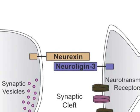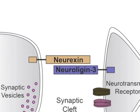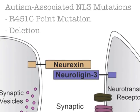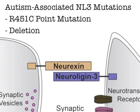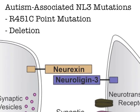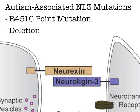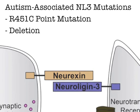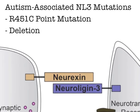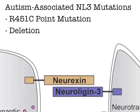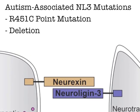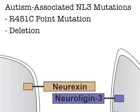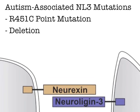Genetic mutations in Neuroligin-3 have been identified in humans with autism spectrum disorders. These mutations include a large deletion, as well as the R451C point mutation. We study mice carrying these Neuroligin-3 mutations in hopes of better understanding how these autism-associated genetic mutations affect brain function and behavior.